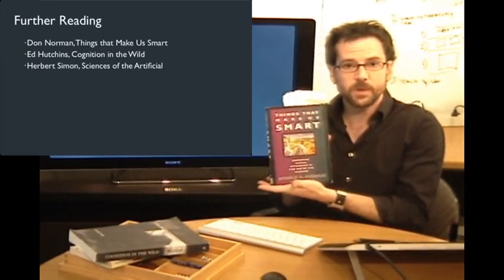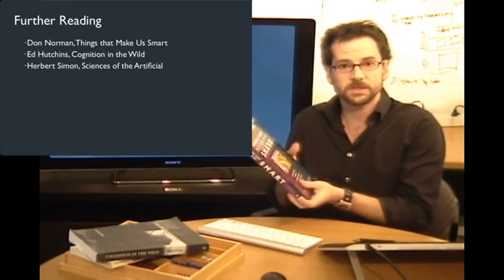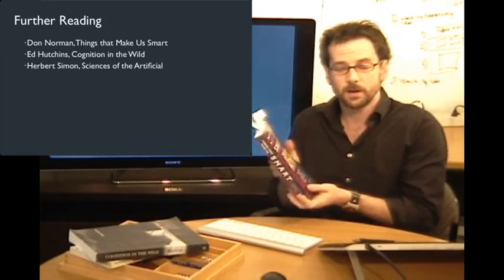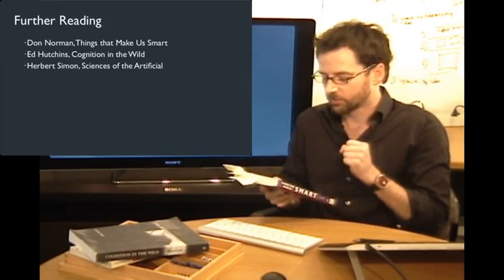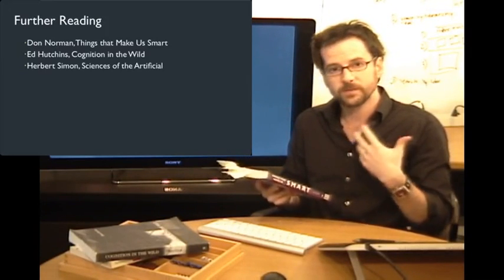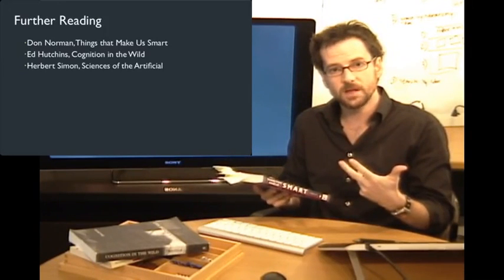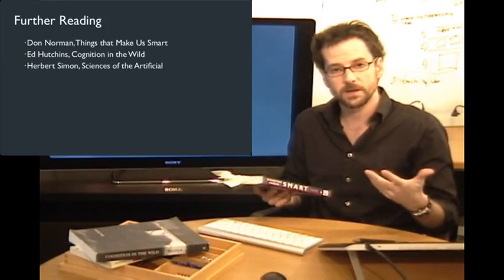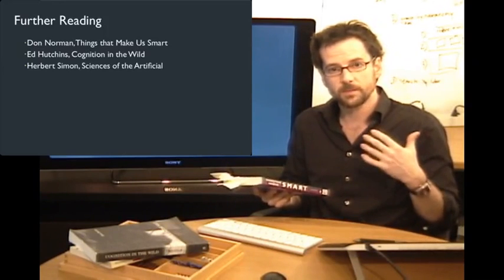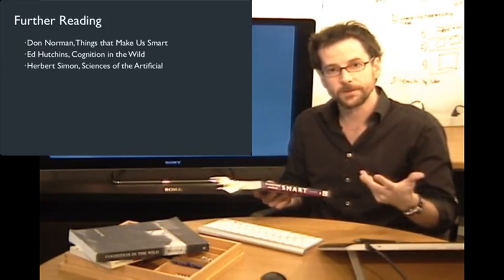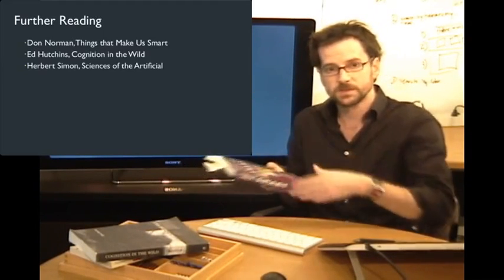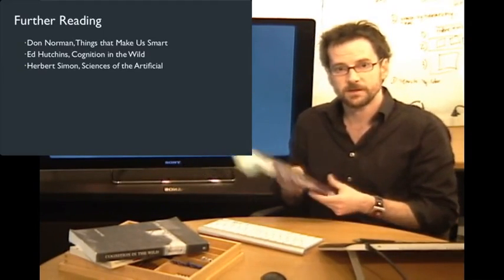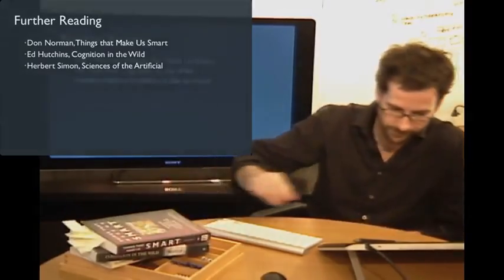The last one is Don Norman's book Things That Make Us Smart, which covers a great deal of cognitive science research on distributed cognition and the role of representations in cognition — and is one of the sources of several examples used in these lectures. I'll see you next time.